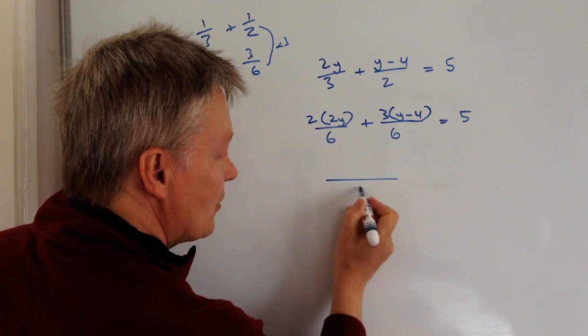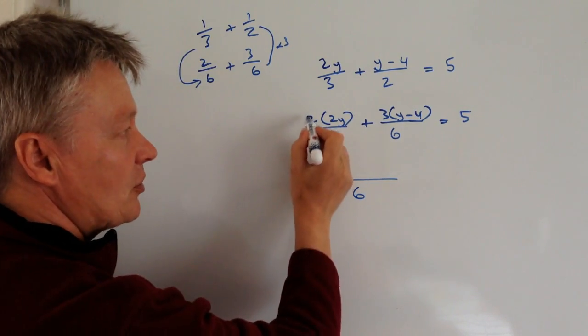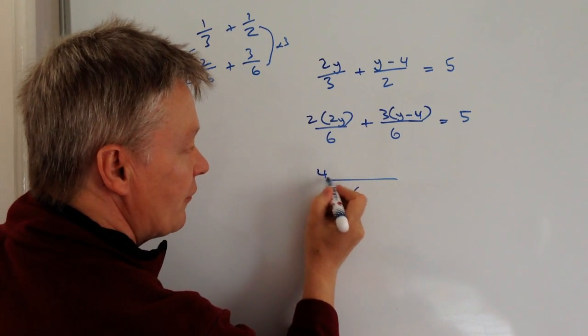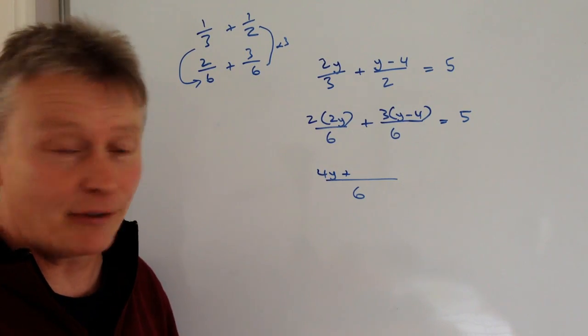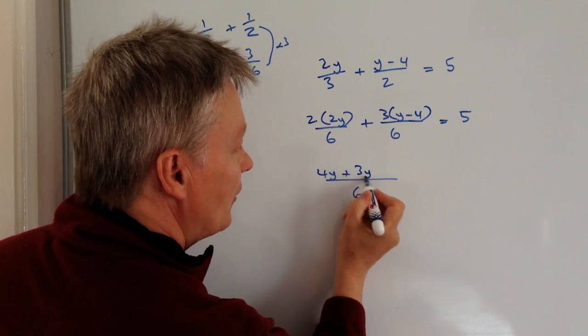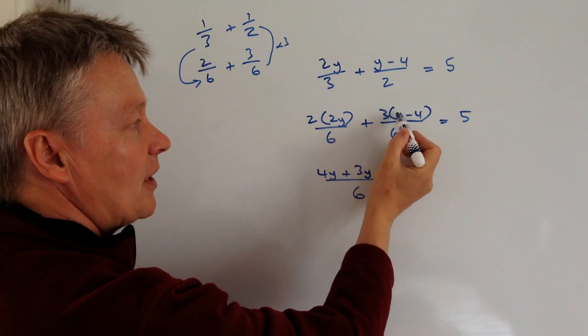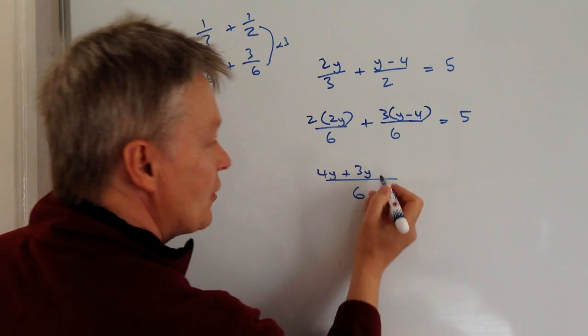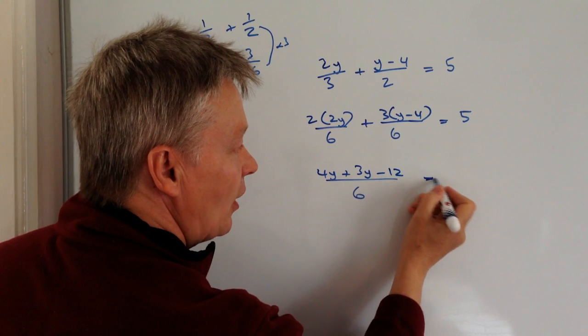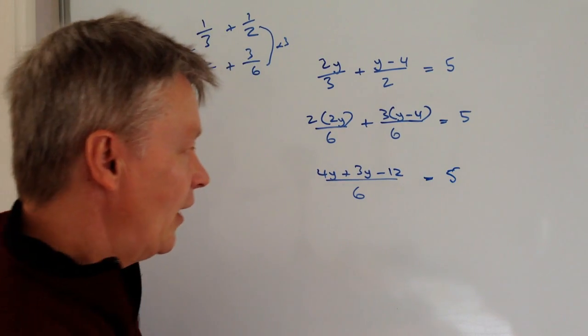So let's just tidy that up a little bit. We know the denominator is now six. And at the top, I've got two times 2y, which is 4y. And then I've got plus three times y is 3y. And don't forget, this three multiplies both of these terms. So it's going to be three times minus four, which is minus 12. And that all equals five.